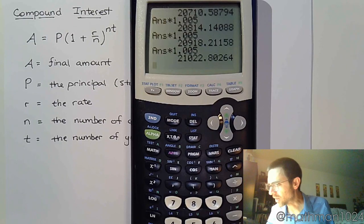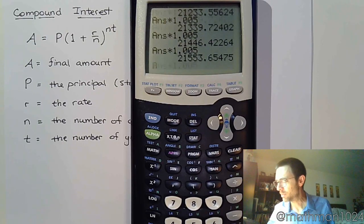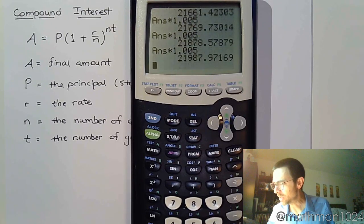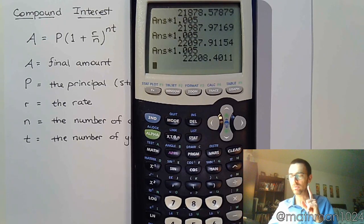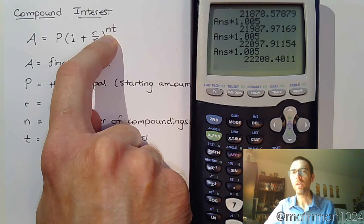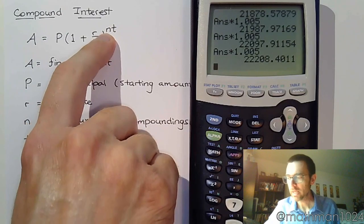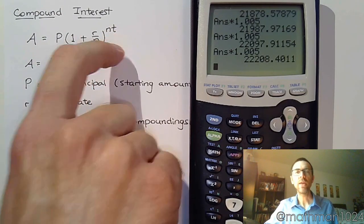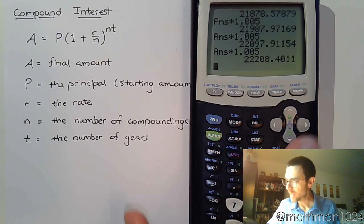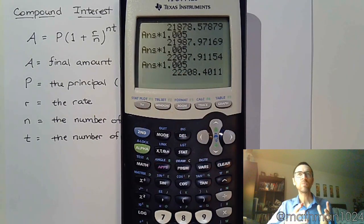With a formula you don't have to count how many times you multiply. The exponent n times t tells you the total number of compoundings. N is the compoundings per year times the number of years t — that's your power, meaning that's how many times the calculator keeps multiplying by that decimal.